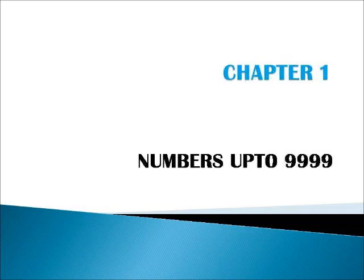In 3rd standard level, our first chapter is about numbers up to 9999. Children, in 2nd standard, you would have learnt about 3-digit numbers. Here in 3rd, we are going to learn about 4-digit numbers too.